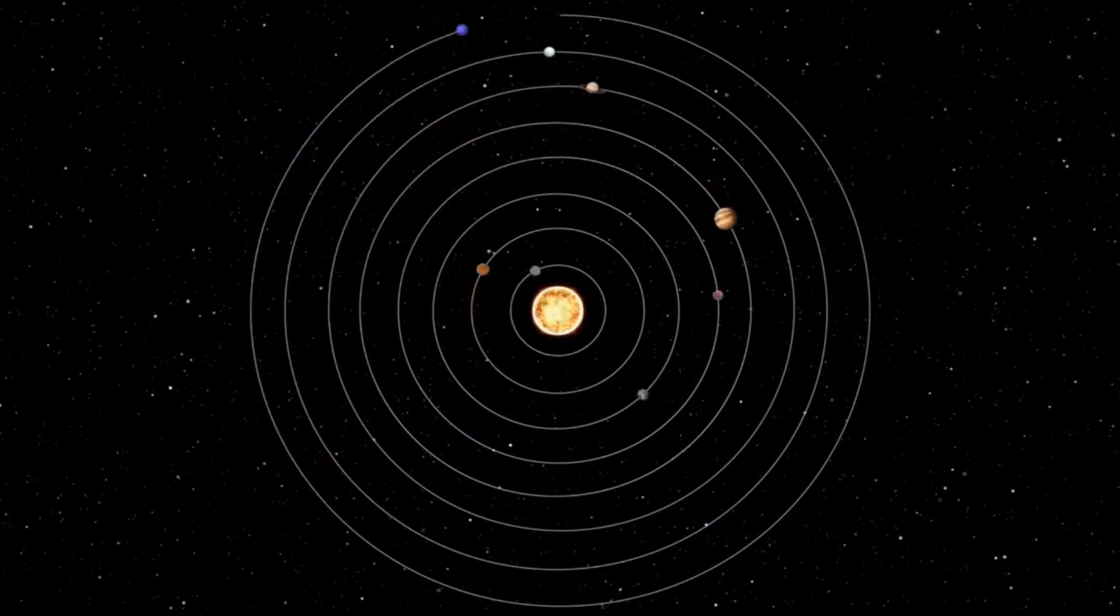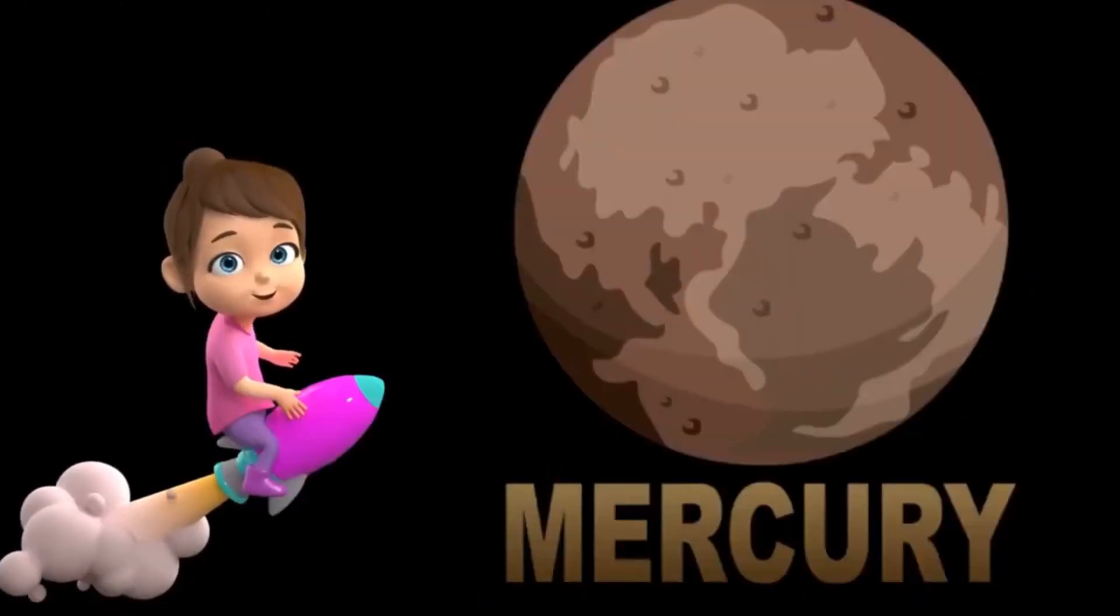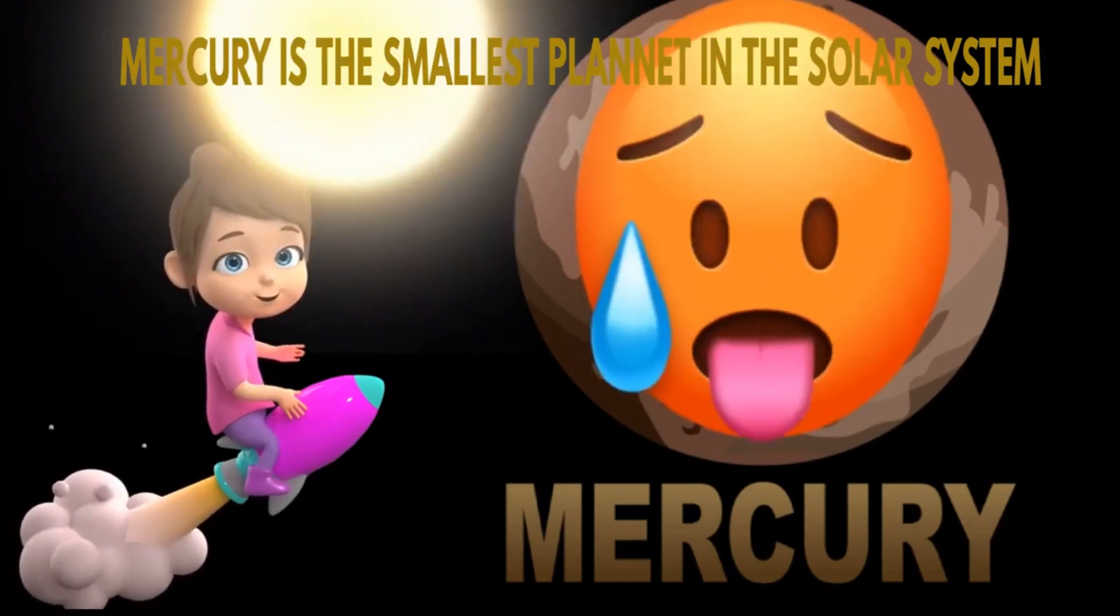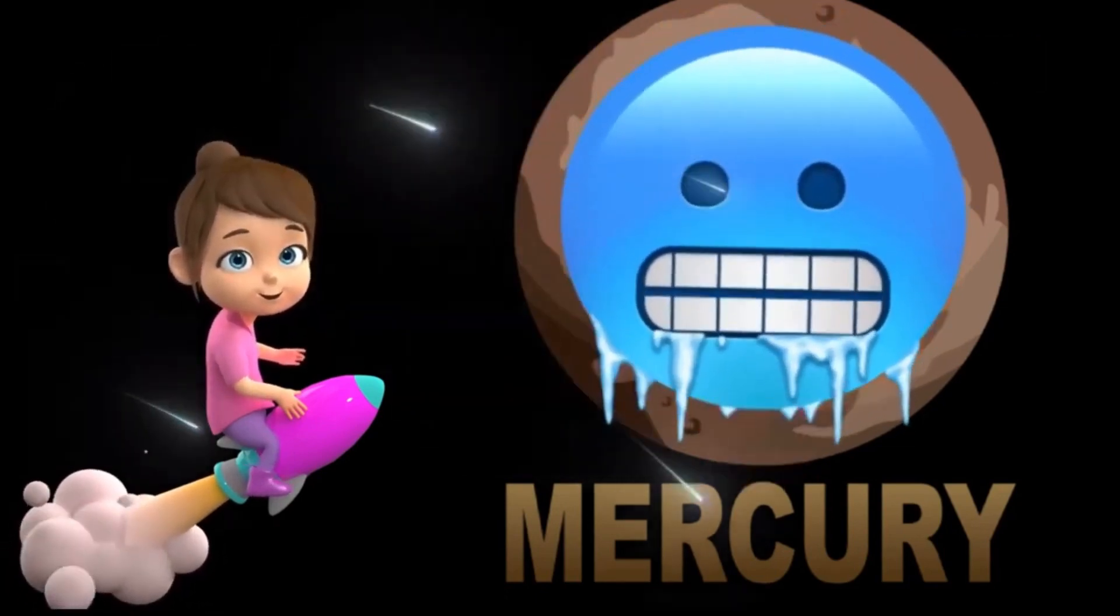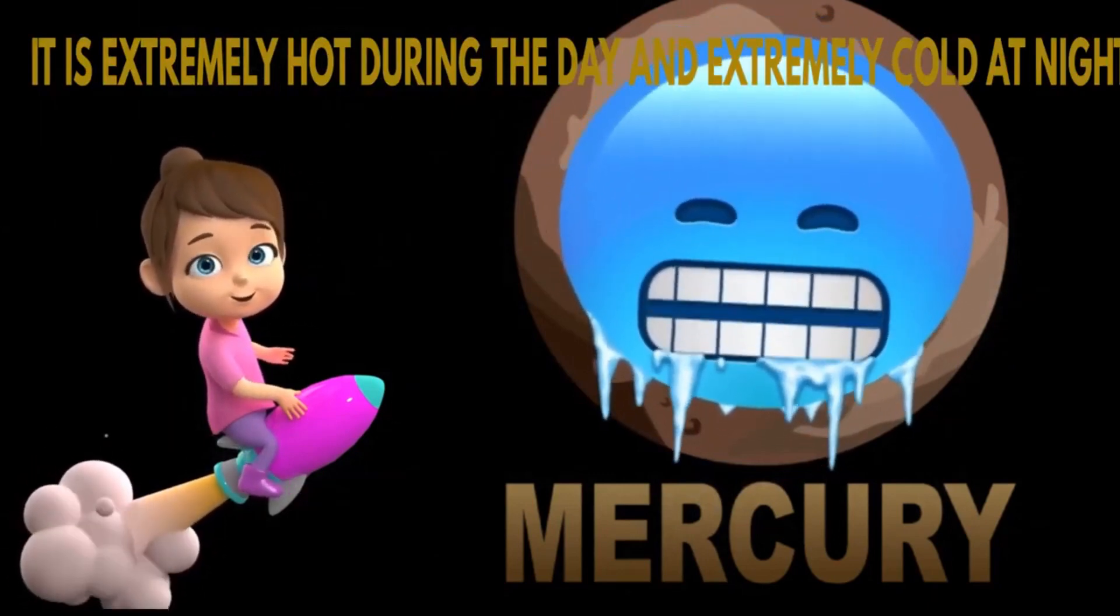Mercury is the smallest planet in the solar system. As Mercury is nearest to the sun, it is extremely hot during the day and extremely cold during the night.